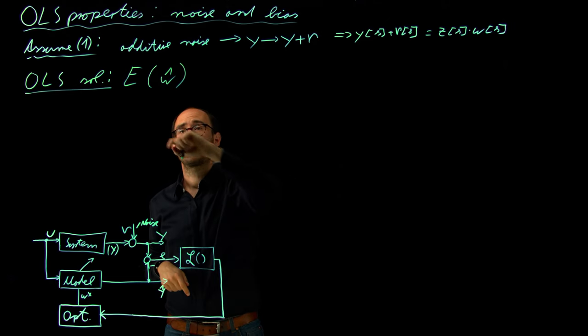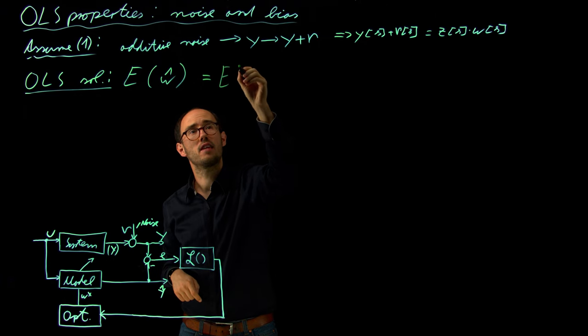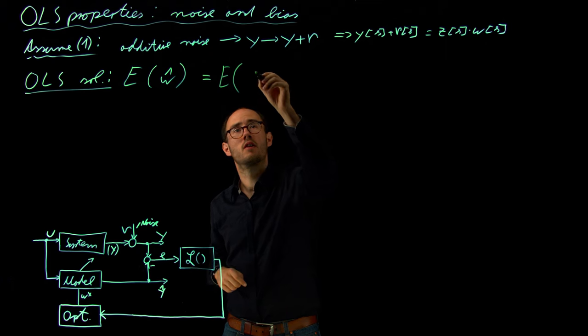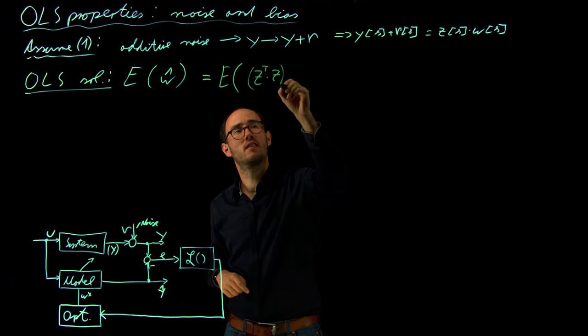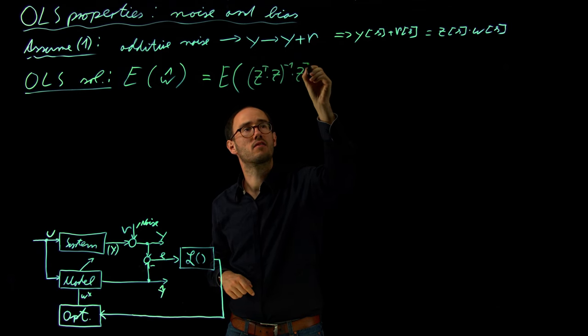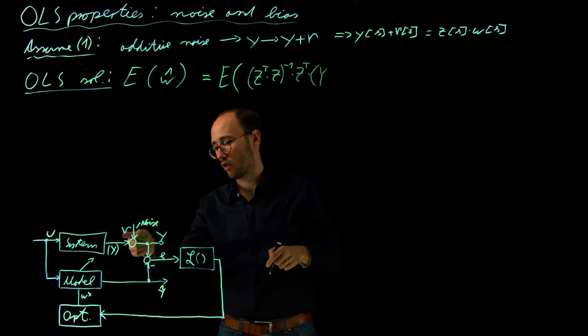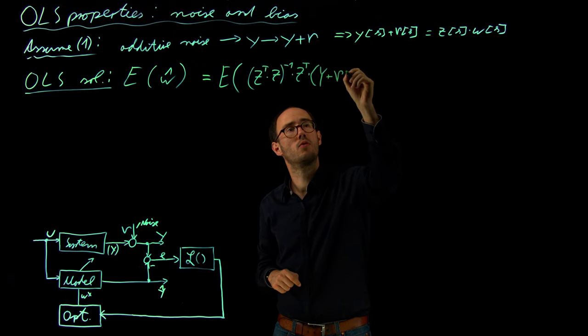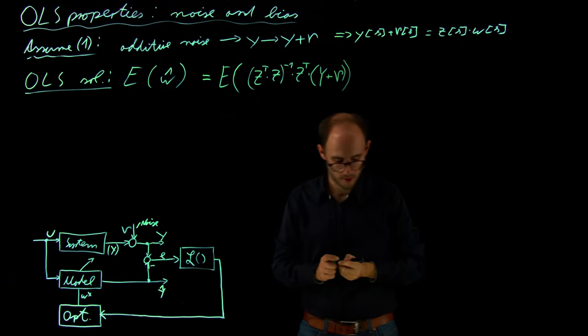And the expectation of W hat is then the expectation of our normal OLS solution, which is Z transpose times Z inverted times Z transpose times Y. So our output vector is also plus mu or measurement noise.